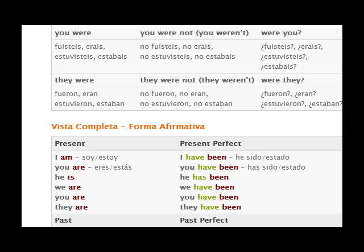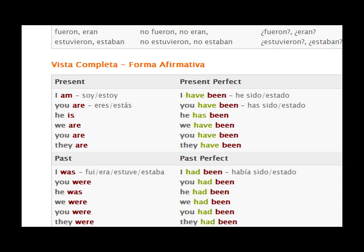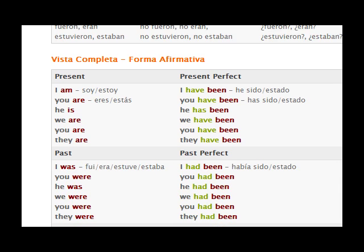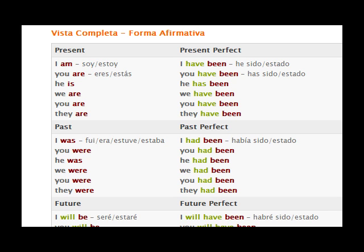Now we come to what you call the complete view. This is the affirmative form in the present tense: I am, you are, he is, we are, you are, they are. And in the present perfect: I have been, you have been, he has been, we have been, you have been, they have been.